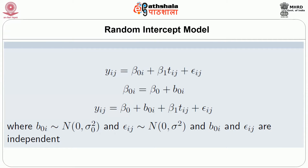Now, we start off with what is called the random intercept model. Consider that I have n individuals and these n individuals have a random start, but the trajectory or the slope is the same. So, that can be modeled as y_ij = β₀ᵢ + β₁·tᵢⱼ + εᵢⱼ, where y_ij is the observation related to the i-th individual at the j-th time point. β₀ᵢ is the intercept of the i-th individual and β₁ is the slope. Note that β₁ is the same for all i's, meaning all individuals have the same slope, but the intercept β₀ᵢ contains the index i, meaning the intercept is different for different subjects.